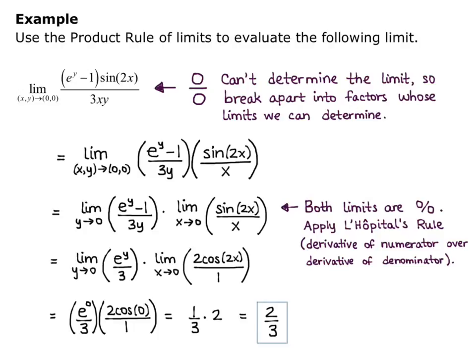So I started with a 2-variable limit, and I broke it apart into 2 factors, each being a single variable limit, and then I could evaluate those using L'Hopital's rule. The product rule can actually help you simplify your limit into limits that you can actually take.